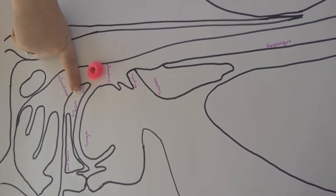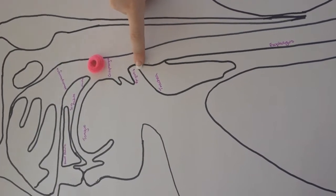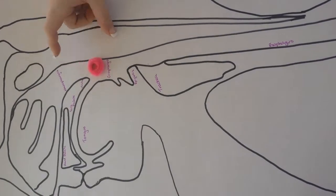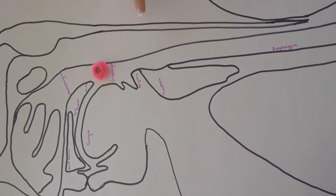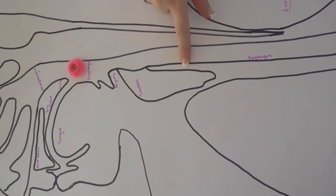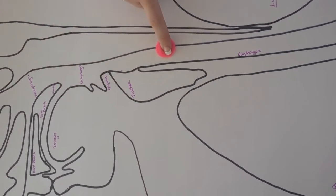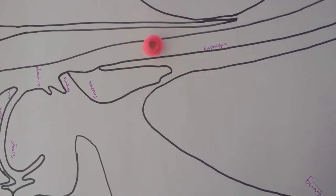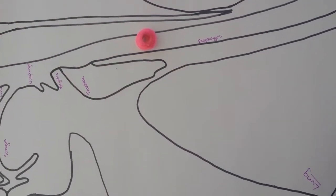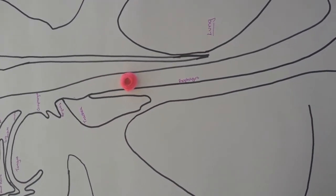The medulla also stimulates the epiglottis to close off the trachea. This prevents food from entering either one of these areas. The upper esophageal sphincter, which is located right here, relaxes and lets the bolus enter the esophagus.